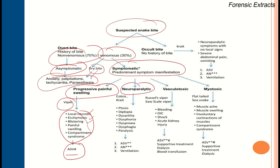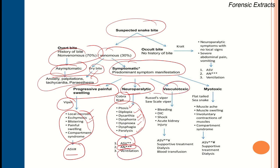For neuroparalytic bites — where the patient has ptosis, diplopia, dysarthria, dysphonia, dysphagia, and paralysis — inject anti-snake venom along with atropine and neostigmine with mechanical ventilation. Vasculotoxic snake bites from Russell's viper or saw-scaled viper present with bleeding, diffuse intravascular coagulation, shock, and acute kidney injury; treat with anti-snake venom, supportive treatment, dialysis for kidney failure, or blood transfusion.